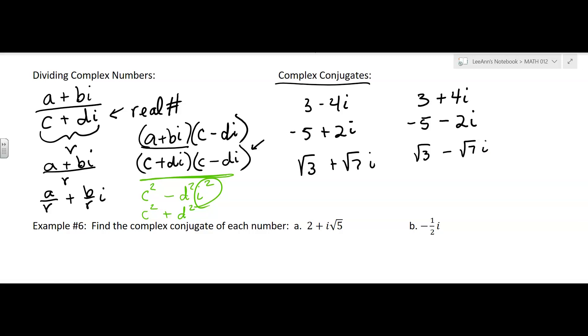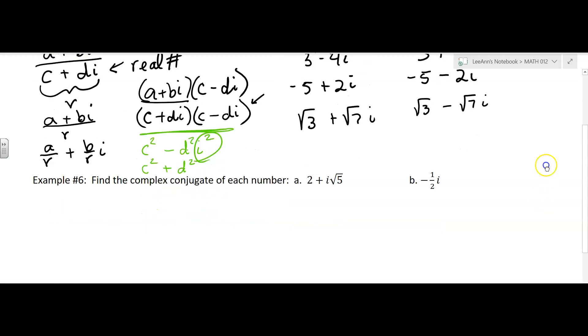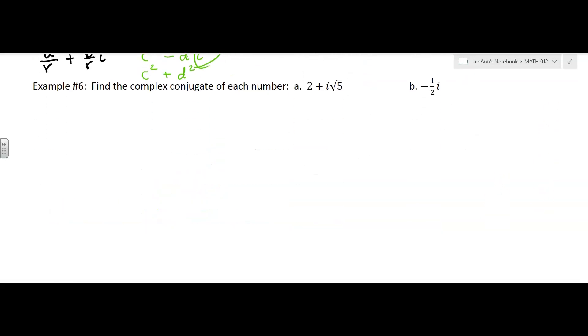Actually, I do see one. It's coming. Okay. It's a little bit different. All right. It says find the complex conjugate of each number. So here you have a number. It's a complex number. It has a real part and an imaginary part.